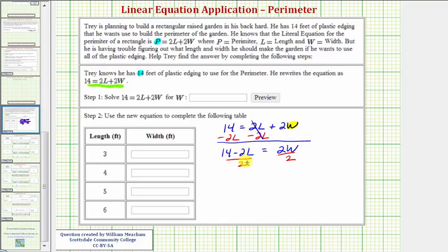Now on the left side because we're dividing by a single term or a monomial, we can write this as two separate fractions. We can write this as 14 divided by 2 minus 2L divided by 2 equals, on the right side, notice 2 divided by 2 simplifies to 1. So we have just W.